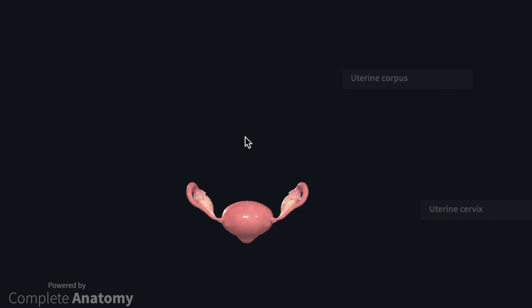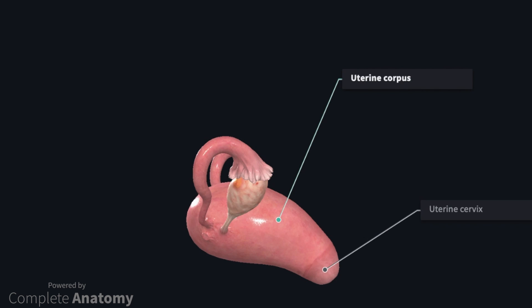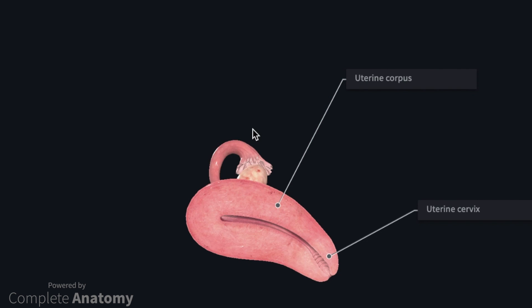The term uterus gets thrown around a lot, yet most are confused as to what structures actually make up the uterus. The uterus consists of the uterine corpus, located here, and most distally, the uterine cervix. The uterine corpus is described as having a fundus, located in the proximal region, and a body. Some textbooks will also describe an isthmic portion, where the uterine cavity narrows as it approaches the cervical canal.